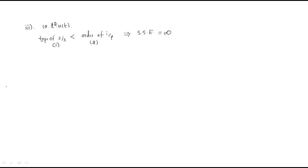The fourth input is (1 + t)·u(t). For this signal, divide it into two parts: part A is 1·u(t), and part B is t·u(t).